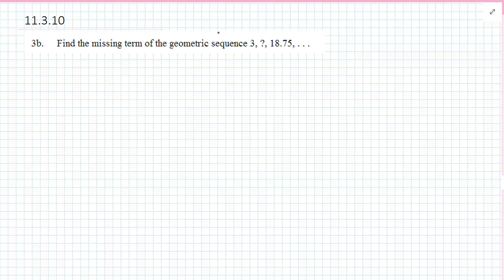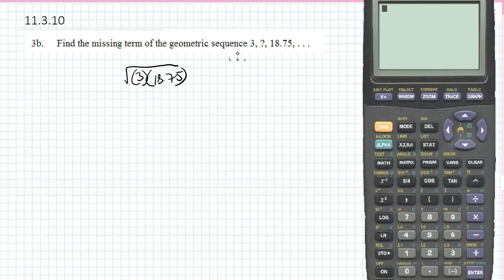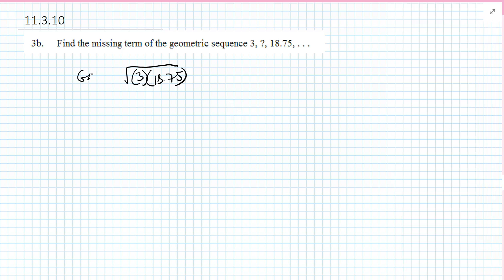Find the missing term of the geometric sequence. We can say it's the square root of 3 times 18.75. That is the job for the handy-dandy calculator. Second square root, 3 times 18.75, enter. The answer would be 7.5. So the geometric mean would be 7.5.